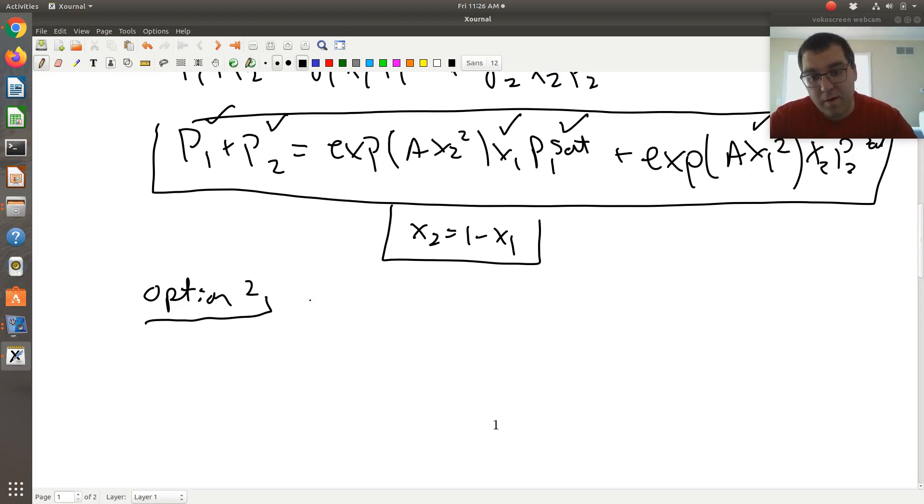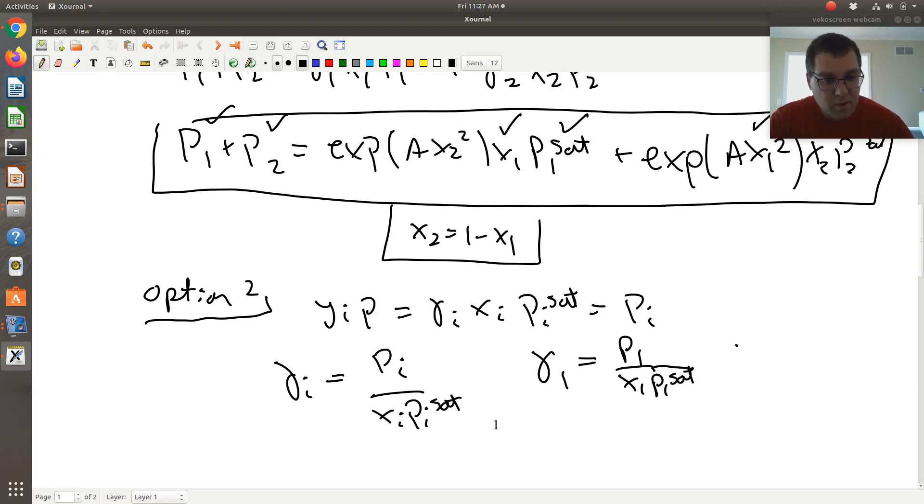And so what I mean by that is I write down my modified Raoult's law expression. So YiP is equal to gamma i, Xi, Pi sat. Or in the context of this problem, YiP is just equal to Pi. So if I solve for gamma i, gamma i is equal to Pi divided by Xi, Pi sat. So we can solve for gamma 1, gamma 1 would be P1 over X1, P1 sat. We can solve for gamma 2, gamma 2 would be P2 over 1 minus X1, or X2, P2 sat.